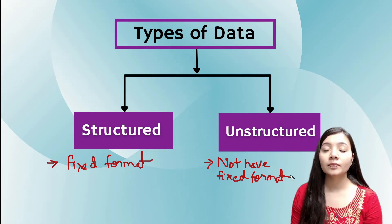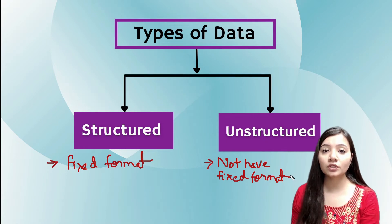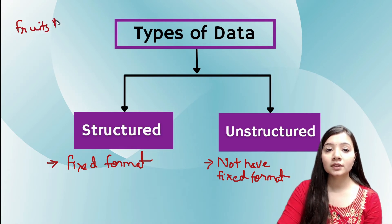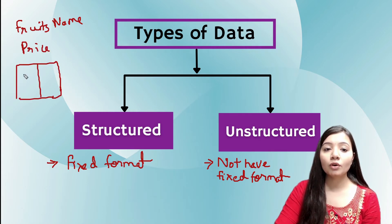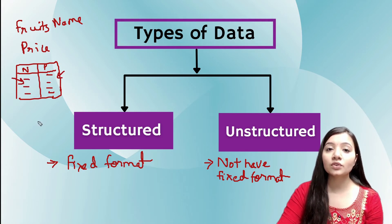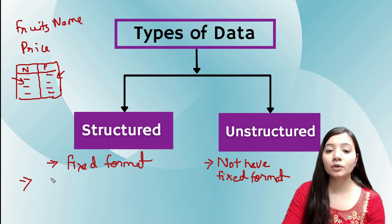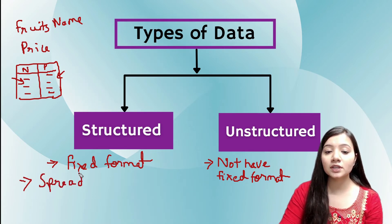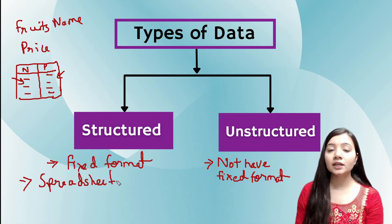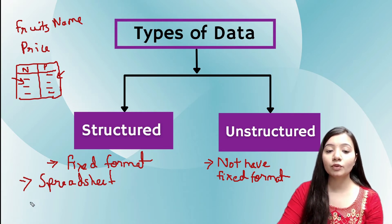Structured data means the data will be present in a structured, fixed format. For example, if we have data of fruit names and their prices and we make a table with columns 'fruit name' and 'price', all the prices go into the price column and all the names into the fruit name column. A spreadsheet or Excel file is a good example — it has column names and data in rows and columns, a tabular format.